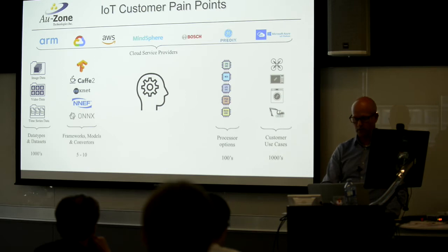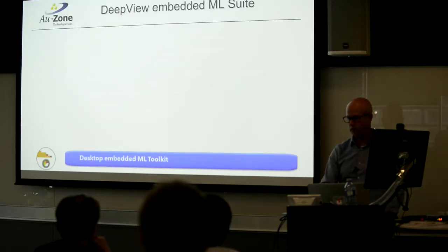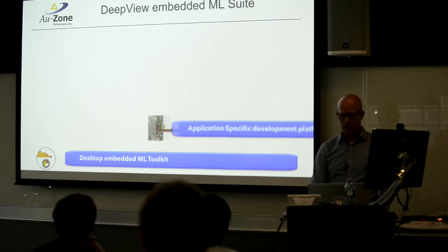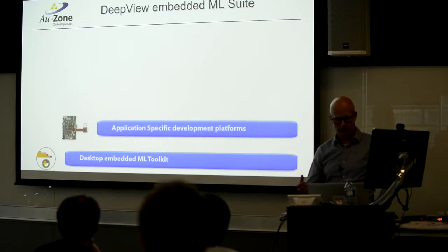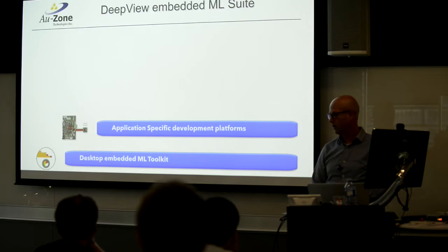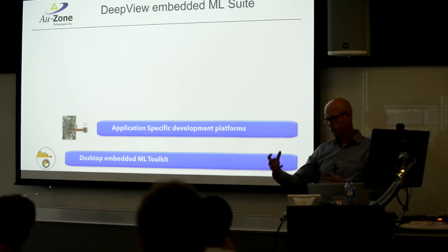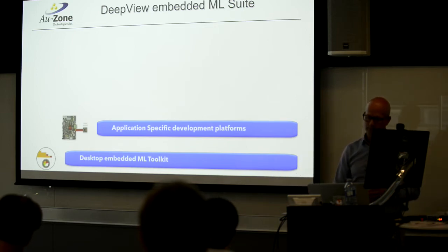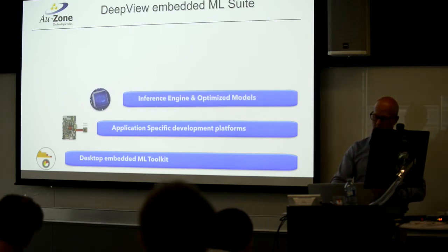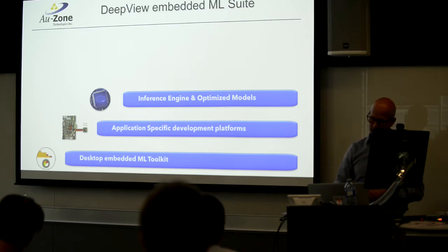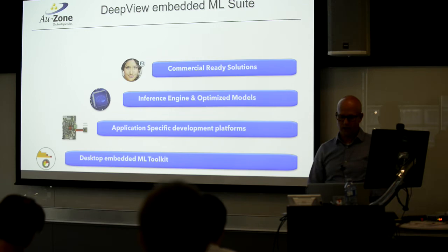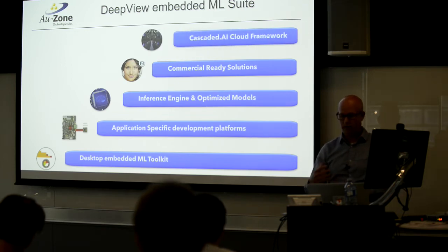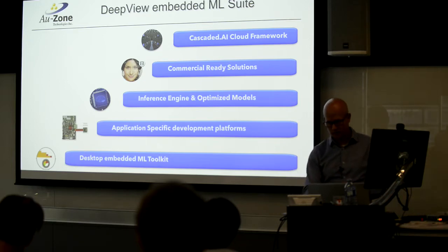The way we try to solve that is with what we call the DeepView Embedded Machine Learning Suite — a set of components and software that help people develop and deploy these products. There's a desktop toolkit that helps you design and profile your models with features that help you decide and optimize a model for a given target, so you can see what your memory consumption looks like. There are application-specific development platforms, an inference engine, optimized models for certain classes of problems, commercial-ready solutions, and a framework to tie it into the cloud — which is an agnostic framework.